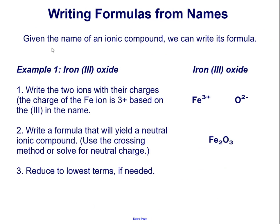Writing formulas from names. Example 1: iron(III) oxide. First we write the two ions with their charges, noting that the charge of the iron ion is 3+ based on the Roman numeral 3 in the name. We know that oxygen always has a charge of negative 2. Now write a formula that will yield a neutral ionic compound. We can use the crossing method where the 2 superscript becomes the subscript of iron and the 3 superscript becomes the subscript of oxygen. We reduce to lowest terms if needed, but 2 and 3 are already in lowest terms.